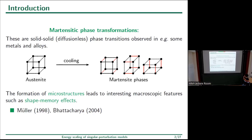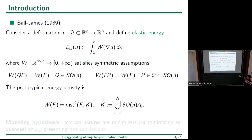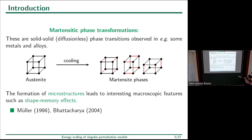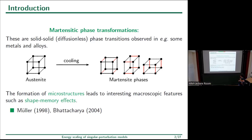Background: variational models for shape memory alloys. We have to talk about phase transformations observed in some alloys when the material is cooled down and passes from a highly symmetric microscopic lattice structure called the austenite phase to a less symmetric lattice structure called the martensite phase. Due to this lack of symmetry we may have several energetically equivalent states, and this martensitic phase transformation is characterized by the formation of microstructure, which has interesting macroscopic effects such as shape memory and superelasticity.